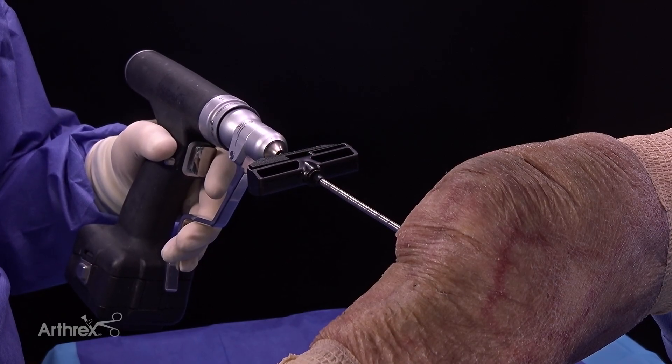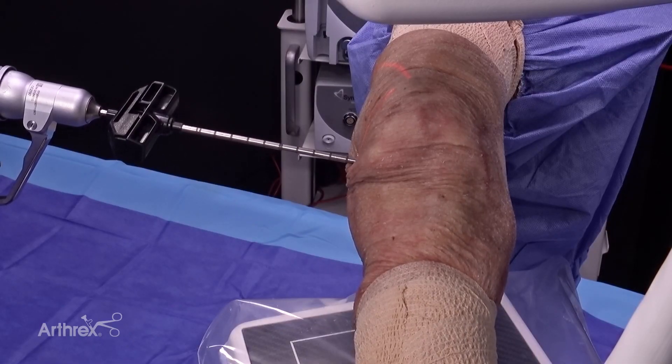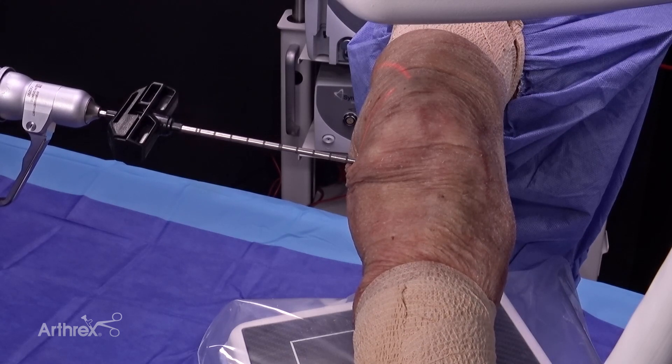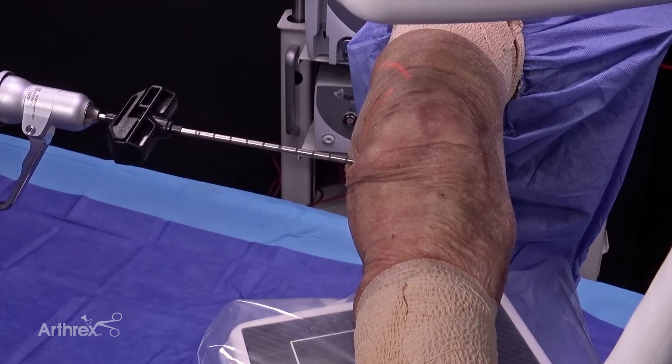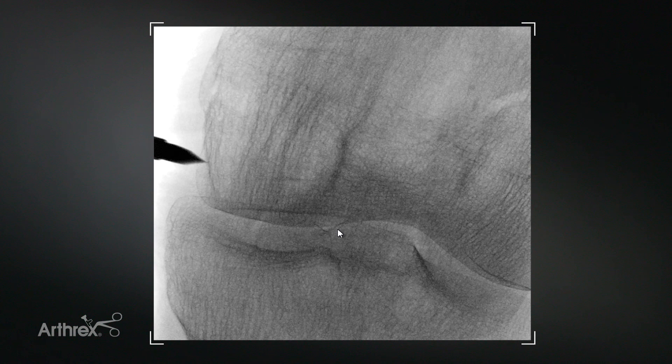So the way we're going to start this off is under fluoroscopic guidance. The trajectory of the delivery guide is very important. So we're going to place this under fluoroscopic guidance and thus that will help us get our guide pin and then subsequent decompression device into the area of interest. So you can see here with this fluoroscopic image that we are close to the joint and we're aiming across to the lateral portion of the medial femoral condyle.